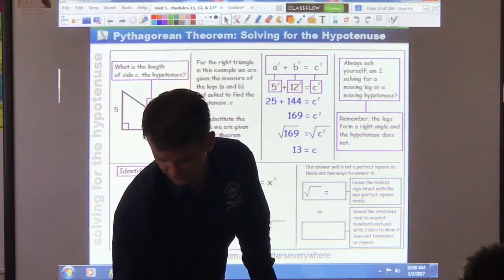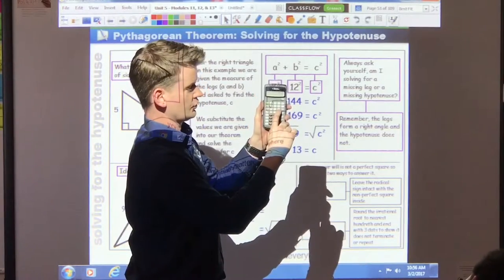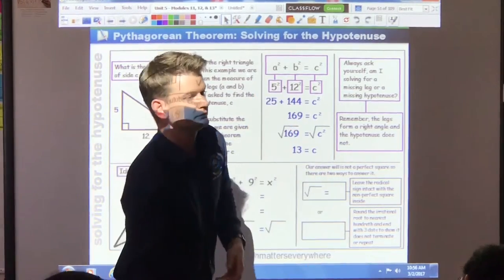The square root button is right next to the square button. Square, square root, square, square root. Okay? Yes.